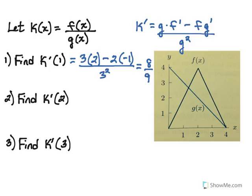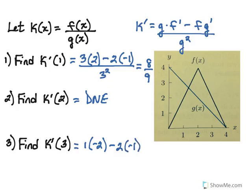At x equals 2, once again because of that vertex, k prime of 2 does not exist — when we get to f prime of 2 that's where the problem lies. At x equals 3: g of 3, about 1, times f prime of 3, about negative 2, minus f of 3, about 2, times the slope on g which is negative 1, all over 1 squared. That comes out to 0. This demonstrates how you can use the product and quotient rules directly from the graphs of given functions to evaluate other combinations of them.